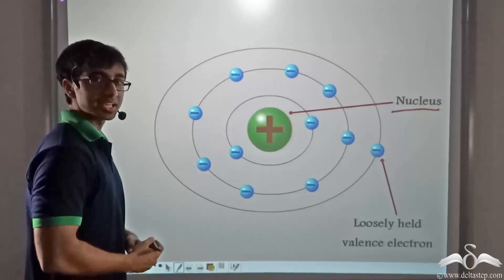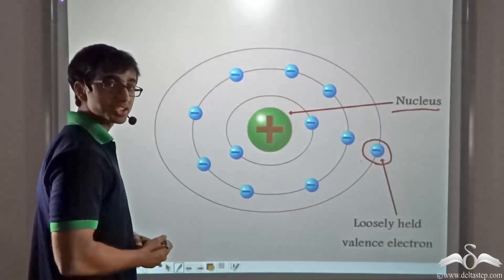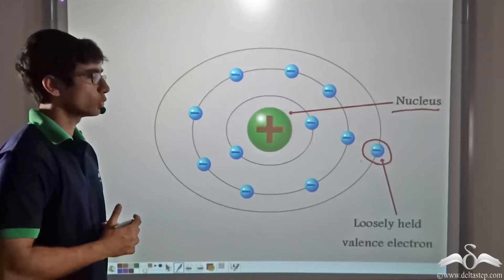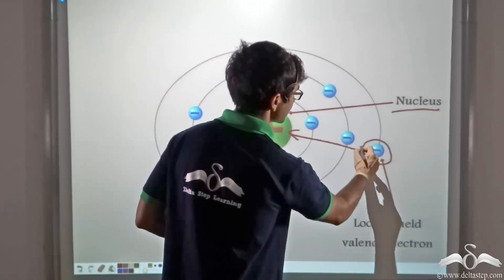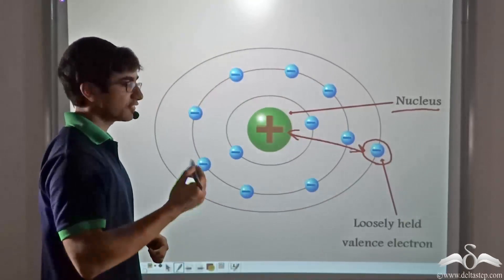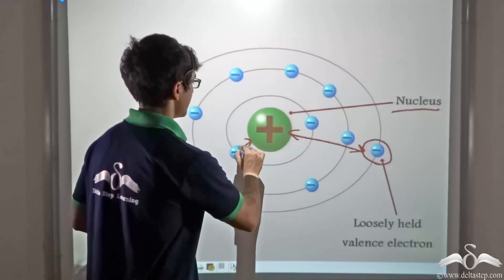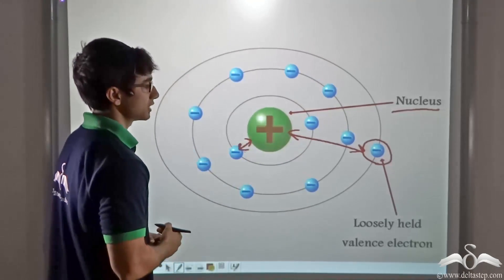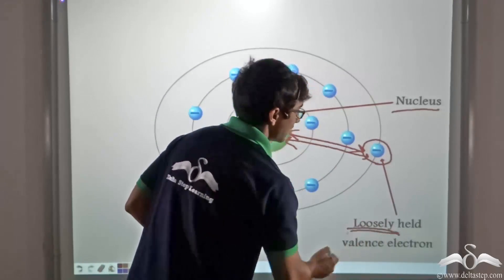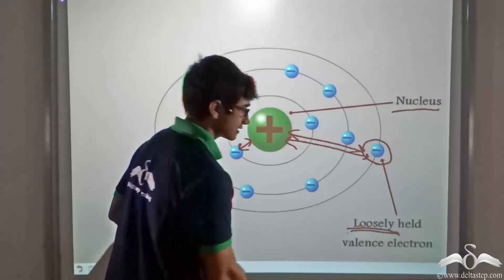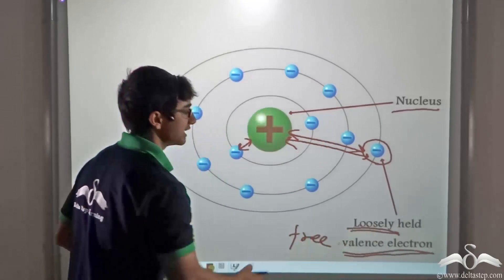In the outermost shell of this atom, we have an electron. This electron is very loosely held because the distance between the nucleus and this electron is quite large — much more than an inner electron. Since this distance is very large, the electron is loosely held, and such an electron is known as a valence electron or a free electron.